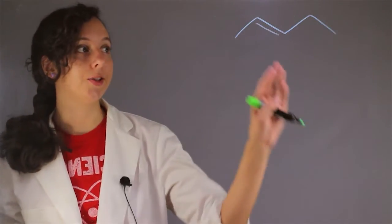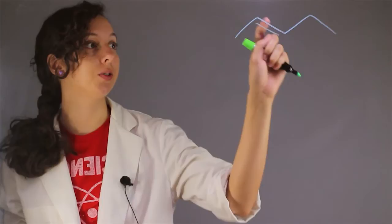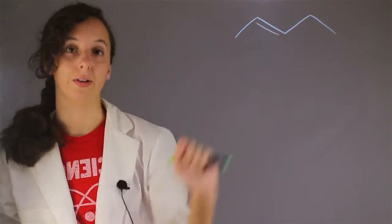So first let's take a look at 2-pentene. Remember that pentene is our prefix for five, so we have one, two, three, four, five carbons. And ene is our name for alkenes, which means double bonds. And we were told that this is 2-pentene, which means that our alkene starts on carbon number two.